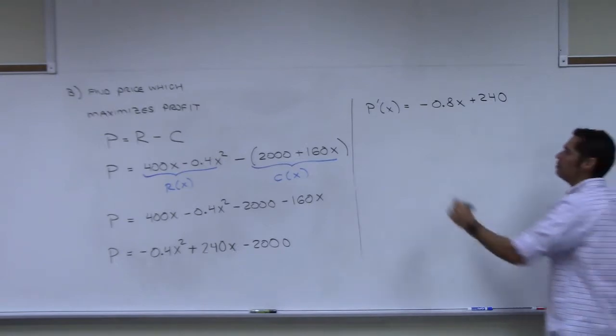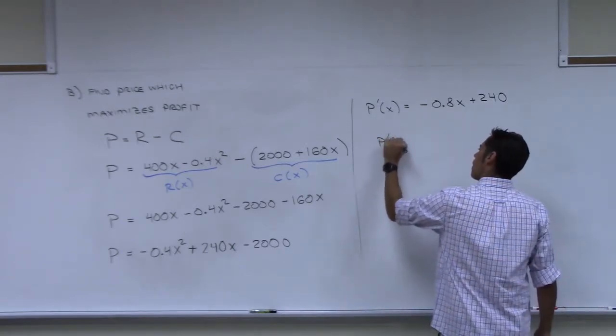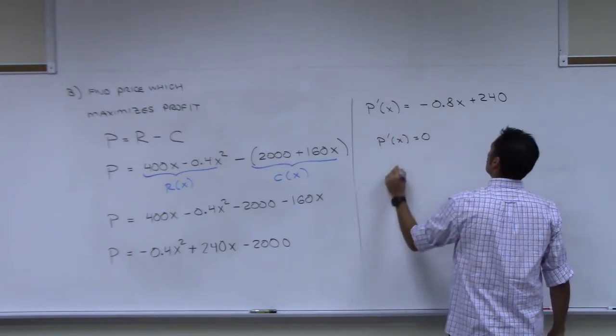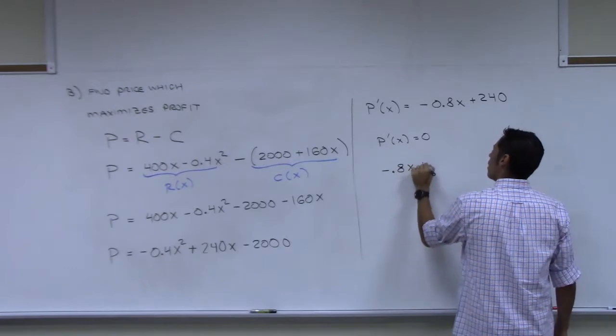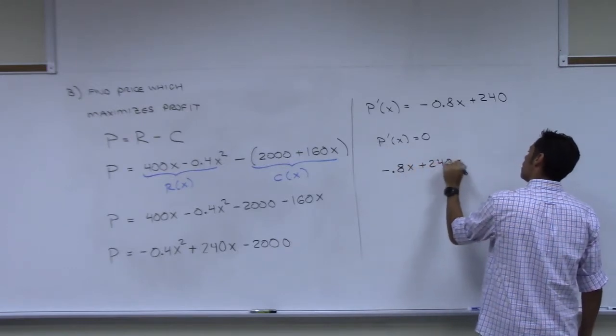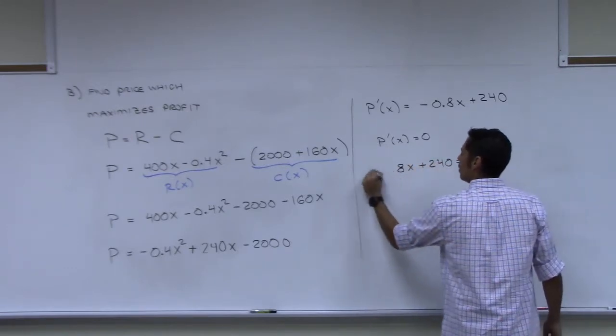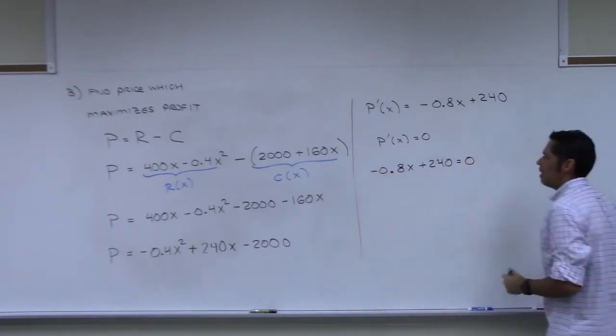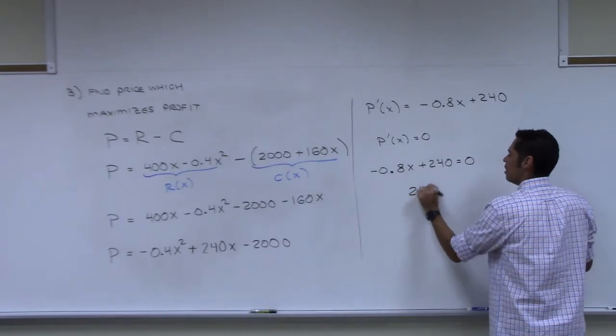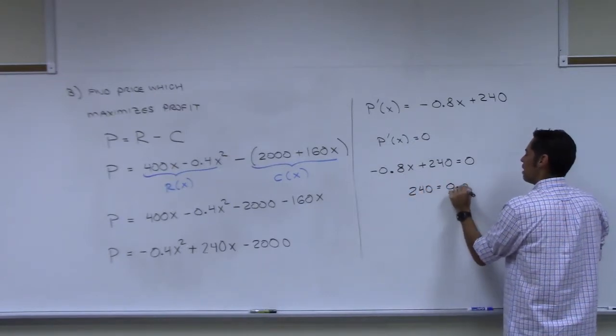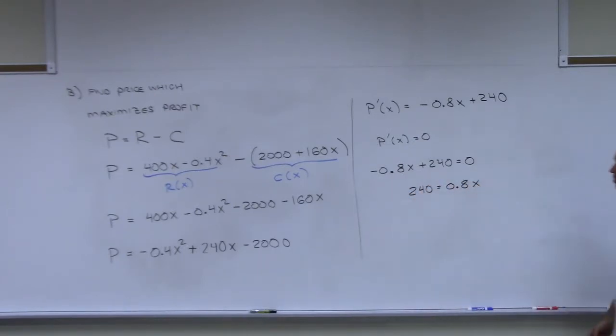Number line, test points. Okay, our derivative profit, let's write it p prime of x. The derivative is negative 0.8x plus 240. That's a nice derivative, isn't it? Now we set that to zero. So we set negative 0.8x plus 240 equals zero.